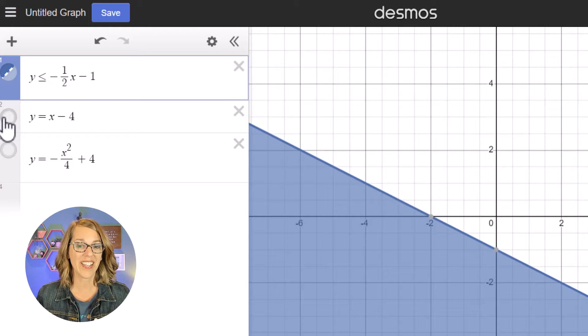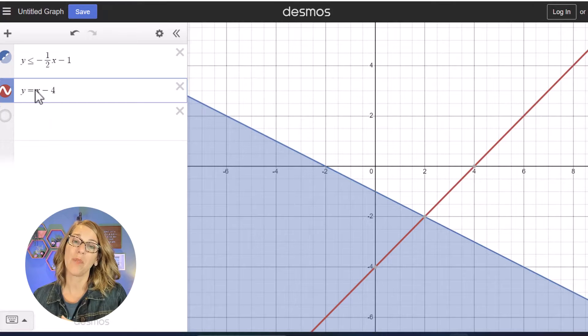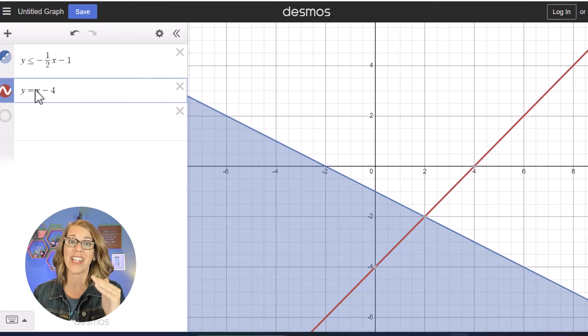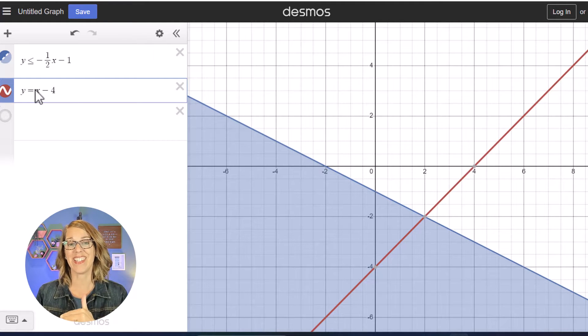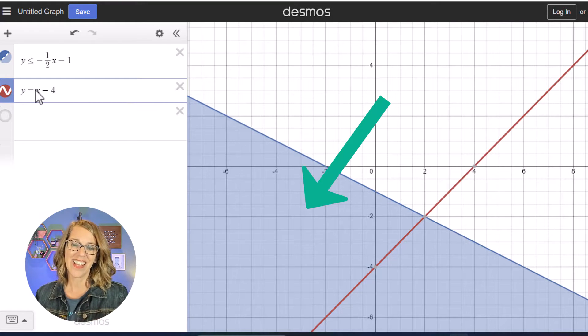Let me go ahead and add in a second line here. Now I can do the same thing with the red line shading above or below, but let's say that I wanted to shade in between these two lines.